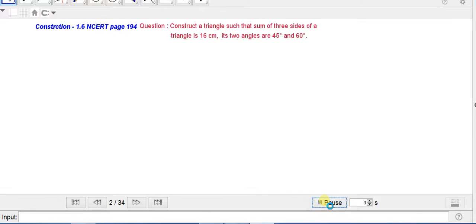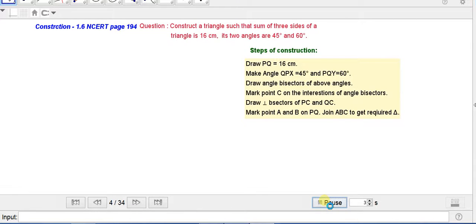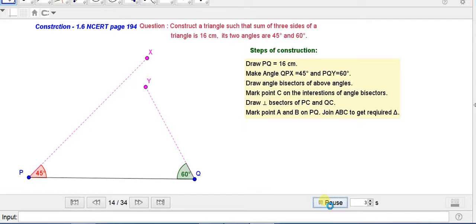So, question appears. Steps of constructions are written here. Point P is taken and Q is taken. We have joined PQ. It is equal to 16 cm. Then, we have taken angle QPX is equal to 45 degree. And PQY is equal to 60 degree.